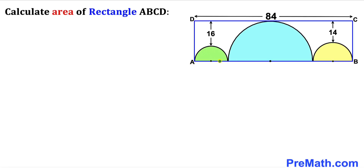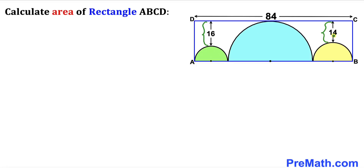Welcome to pre-math. In this video we have three semicircles inscribed in a rectangle ABCD, and these semicircles are tangent to each other. The length of this rectangle is 84 units, whereas the vertical distances are 16 and 14 respectively. Now we are going to calculate the area of this rectangle ABCD.